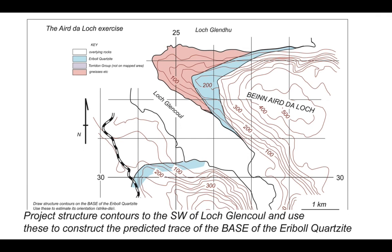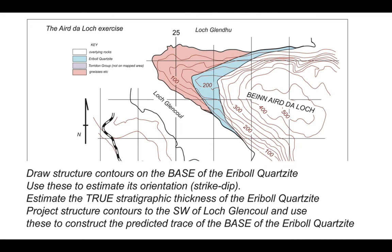It's an enormously powerful technique for building a hypothesis-based approach in geological mapping. To recap: we drew structure contours on the base of the Arable Quartzite and used these to estimate the orientation of this boundary, reporting it in terms of a strike of 032 and a dip of 12 degrees to the southeast. We then estimated the formation's true stratigraphic thickness as 210 meters, and finally projected our structure contour array southwest across Loch Lane Cool to construct the predicted trace of this boundary in the otherwise unmapped area.